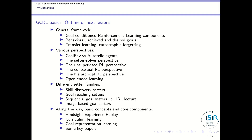We will also look at the learning settings. Once we have all these notions, we will go through different families of settings: skill discovery settings, which try to learn as many skills as possible, and goal-reaching settings corresponding to hierarchical RL. We won't go into full hierarchical RL detail here, as that will be covered in a separate lecture. We will also study image-based goal settings, since that setting is more complicated. Along the way, we will cover other core components such as hindsight experience replay, curriculum learning, and goal representation learning, and we will review key papers.